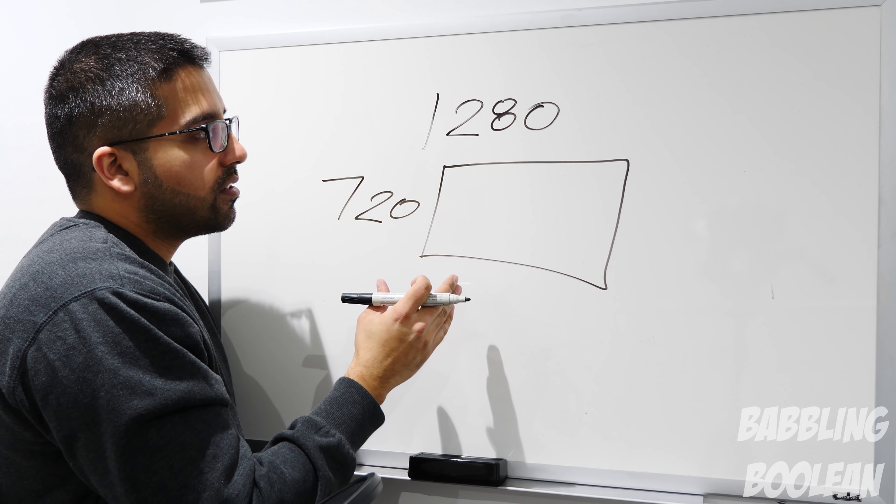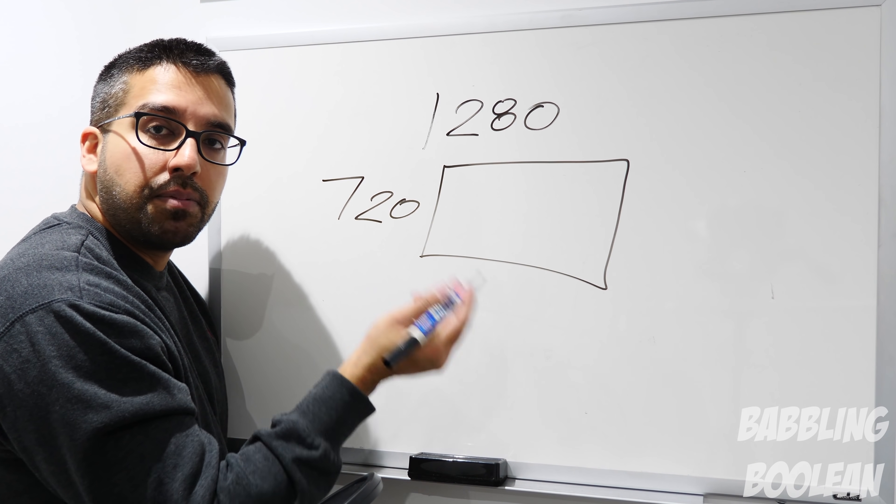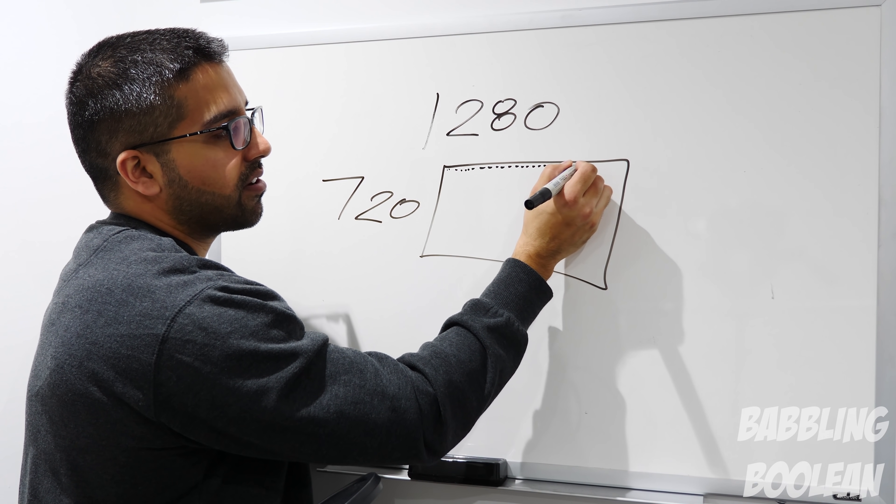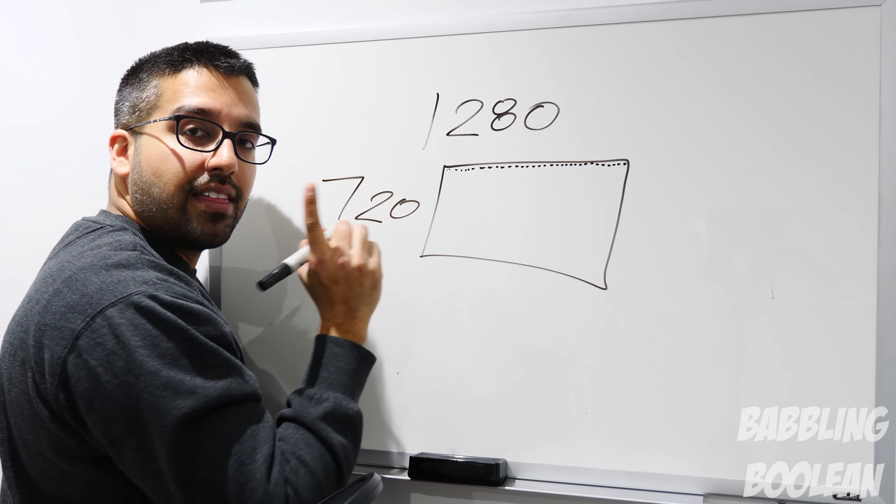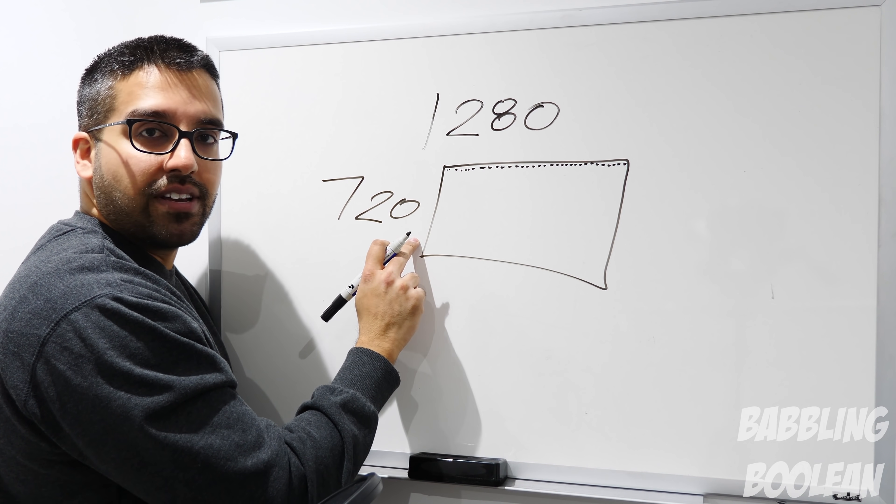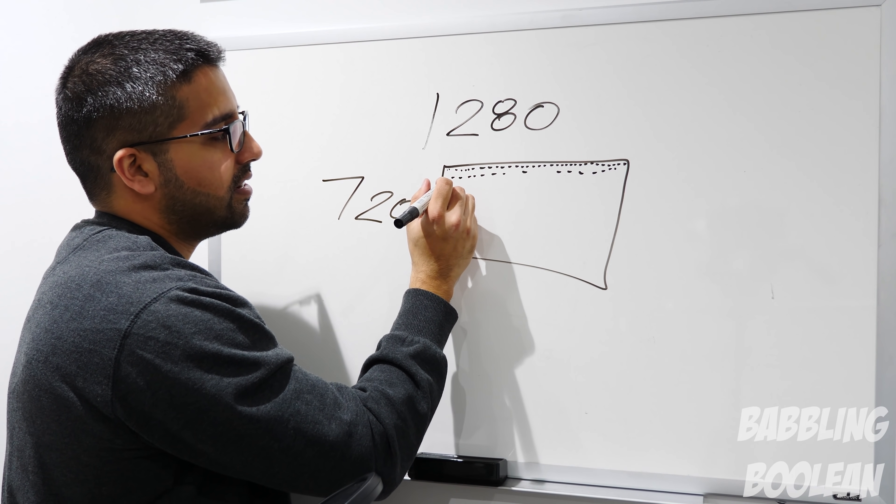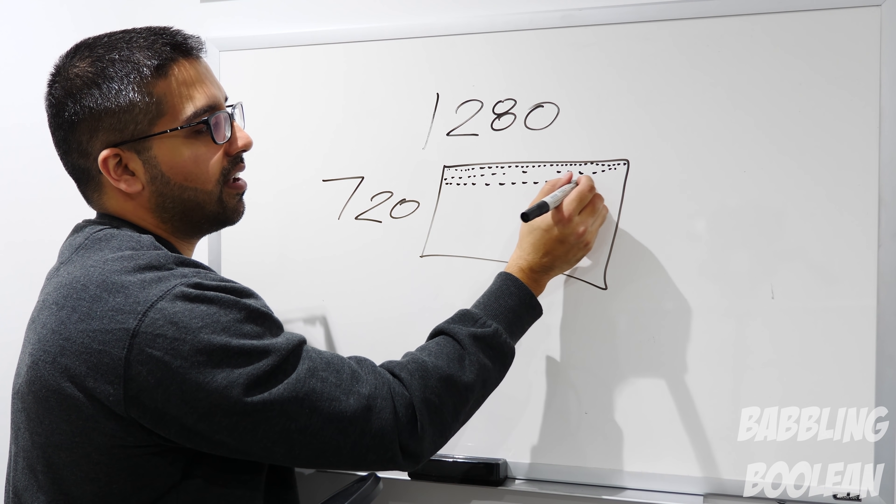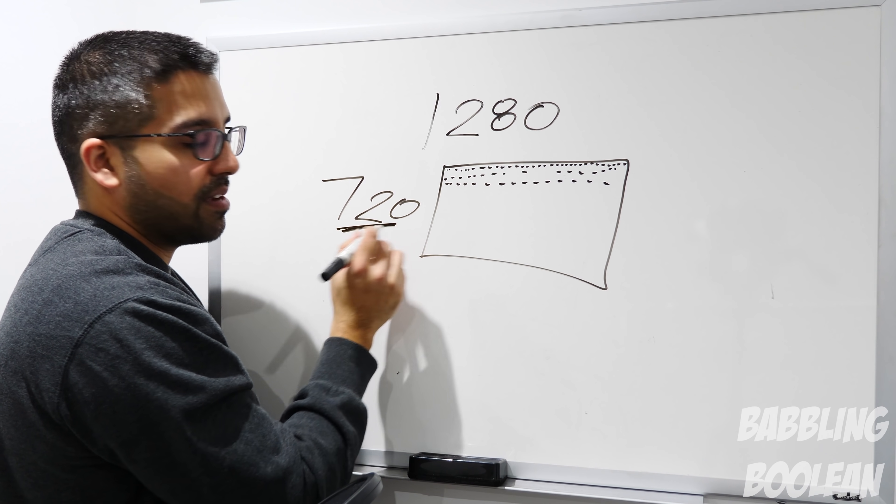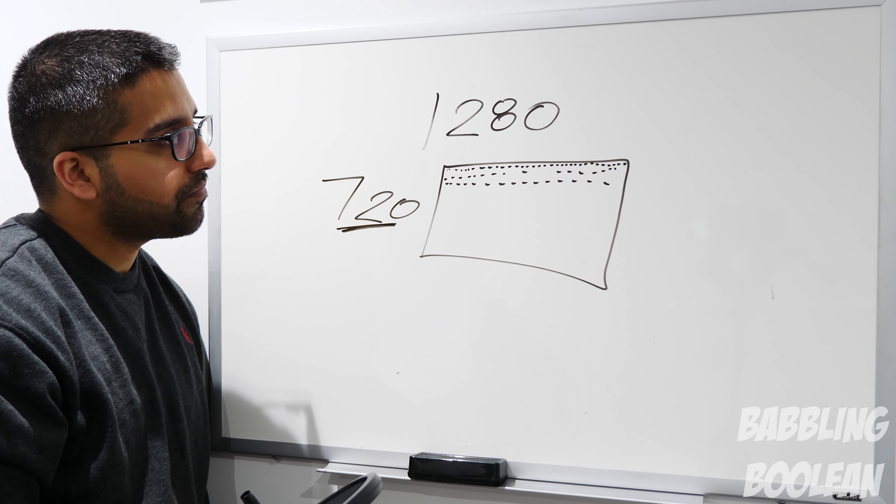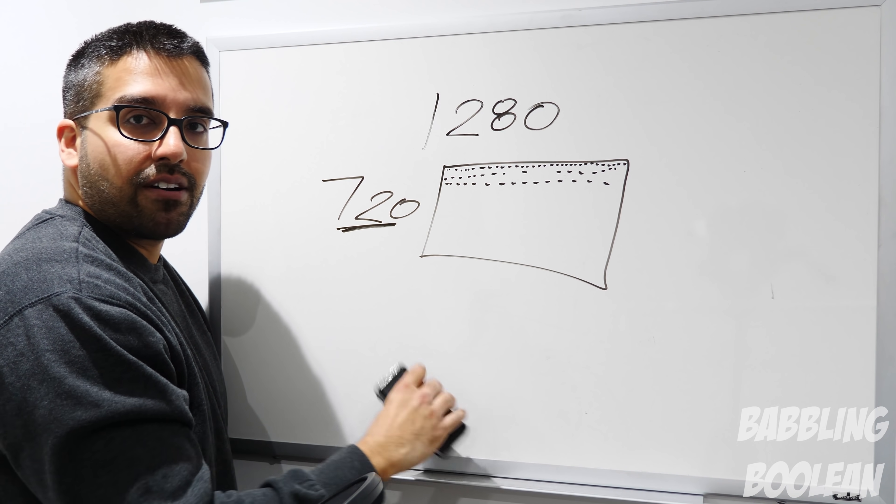On the 720p TV, you have 1280 little pixels going across horizontally, and that happens 720 times. So 1280 on line two, 1280 pixels on line three, so on and so forth, and that happens 720 times. That's where we get the number 720 in 720p.